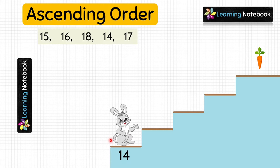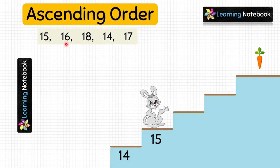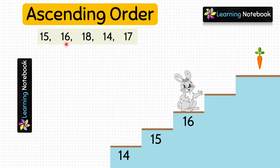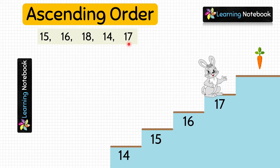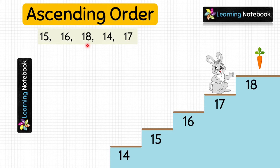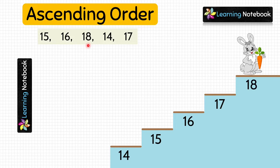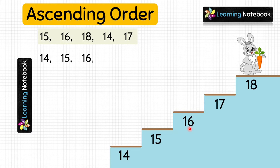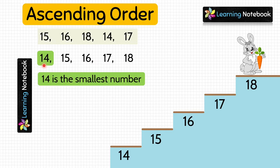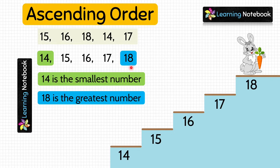Next number will be 15, then 16, then 17, and lastly 18. Bunny has got the carrot! We have got the ascending order as 14, 15, 16, 17, and 18. Since it is in ascending order, the first number 14 is the smallest number and the last number 18 is the greatest number.